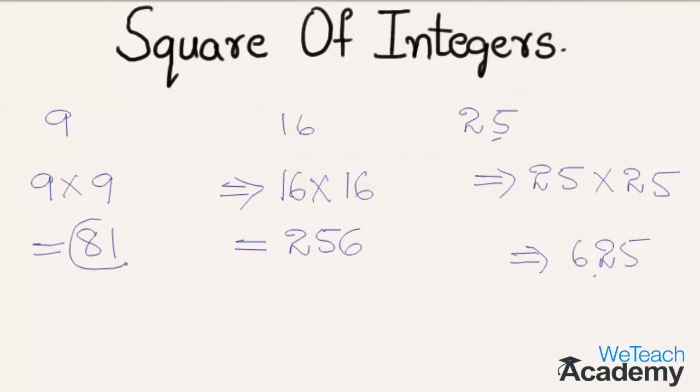So we can write: square root of 81 is 9, square root of 256 is 16, and square root of 625 is 25.